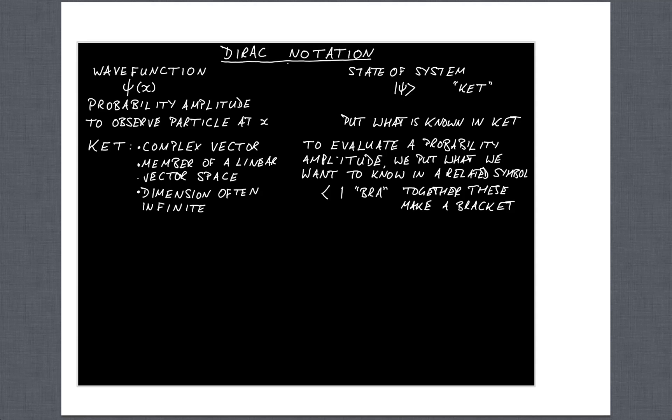If we want to evaluate a probability amplitude from a ket then we put what we want to know in a related symbol known as a bra. When you put a bra and a ket together then you get a bracket. This is a rather feeble joke by Dirac who introduced this idea.